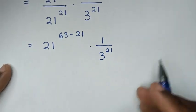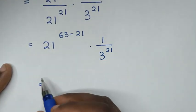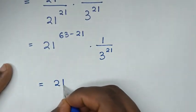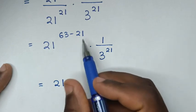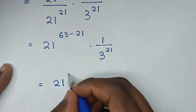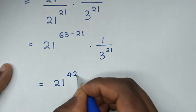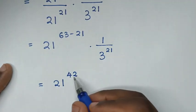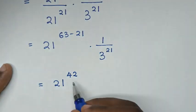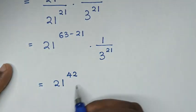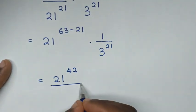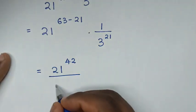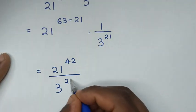So it will be equal to 21 power of 63 minus 21, which is 42. So 21 power of 42 times 1, which is 21 power of 42, then over 3 power of 21.